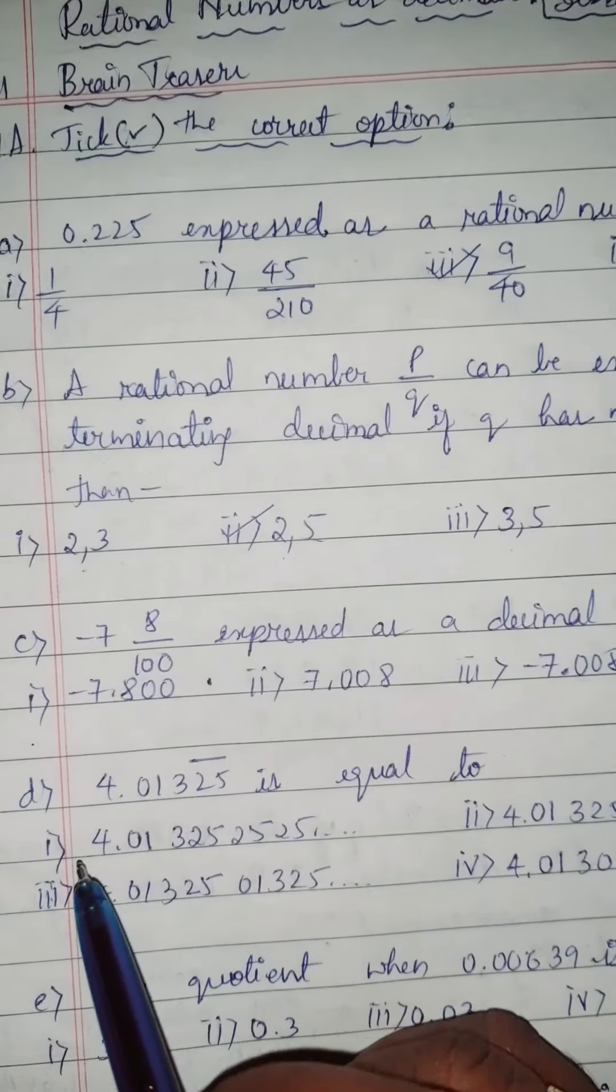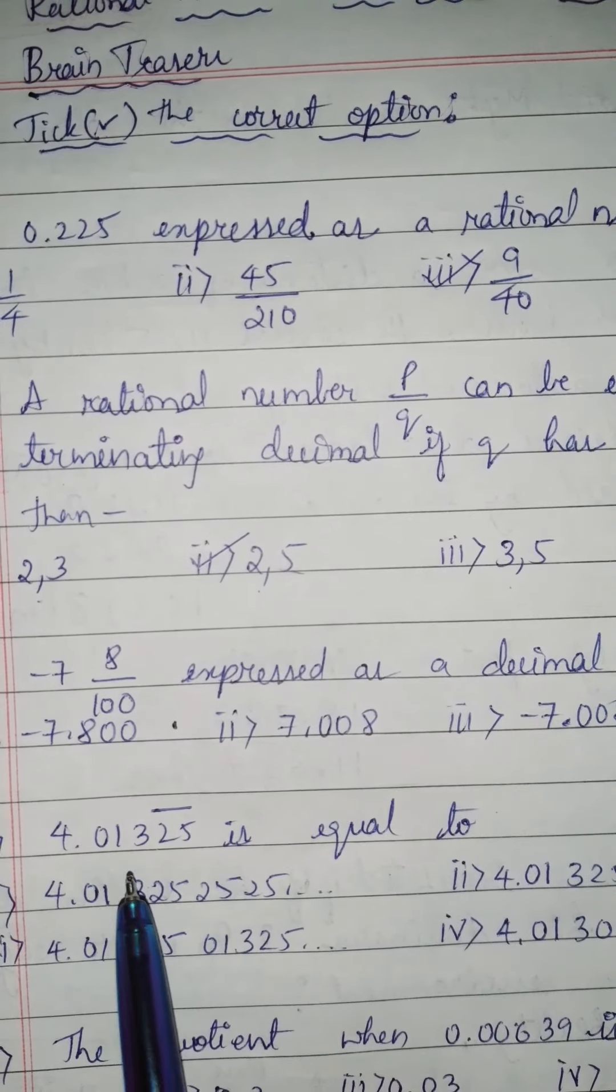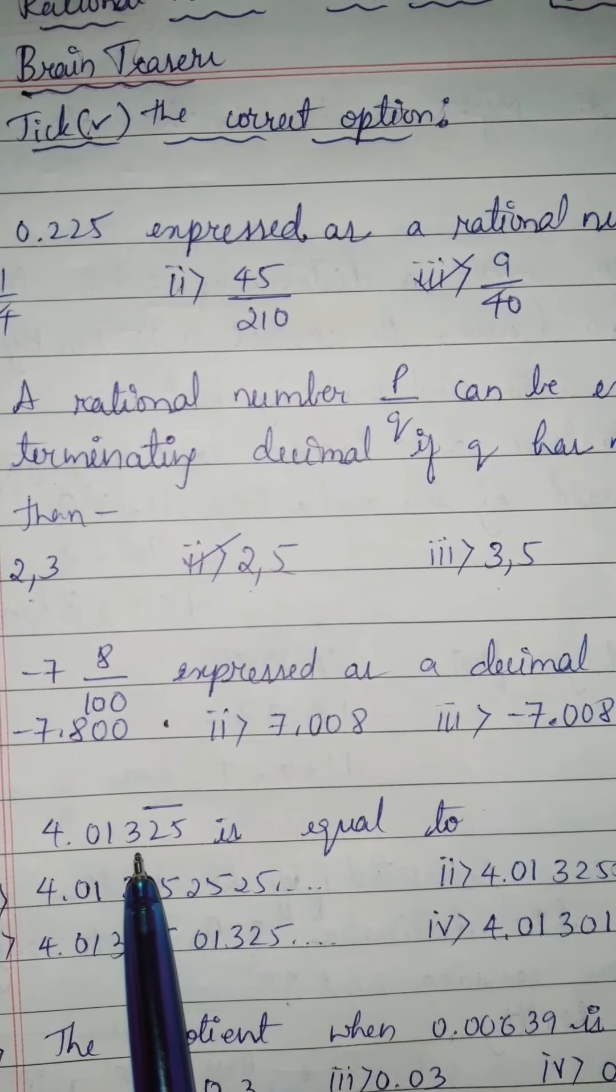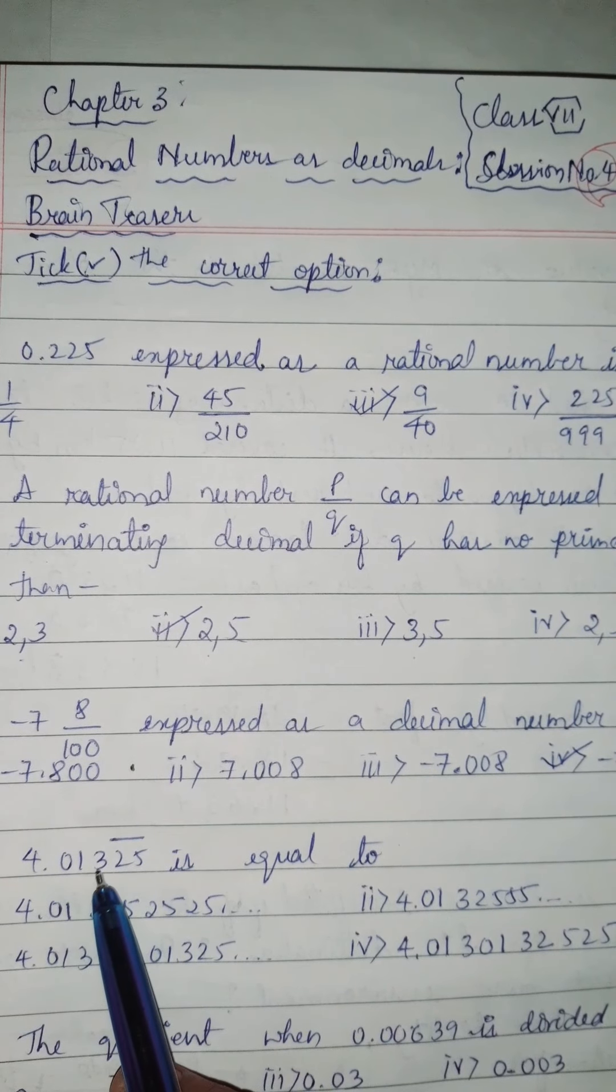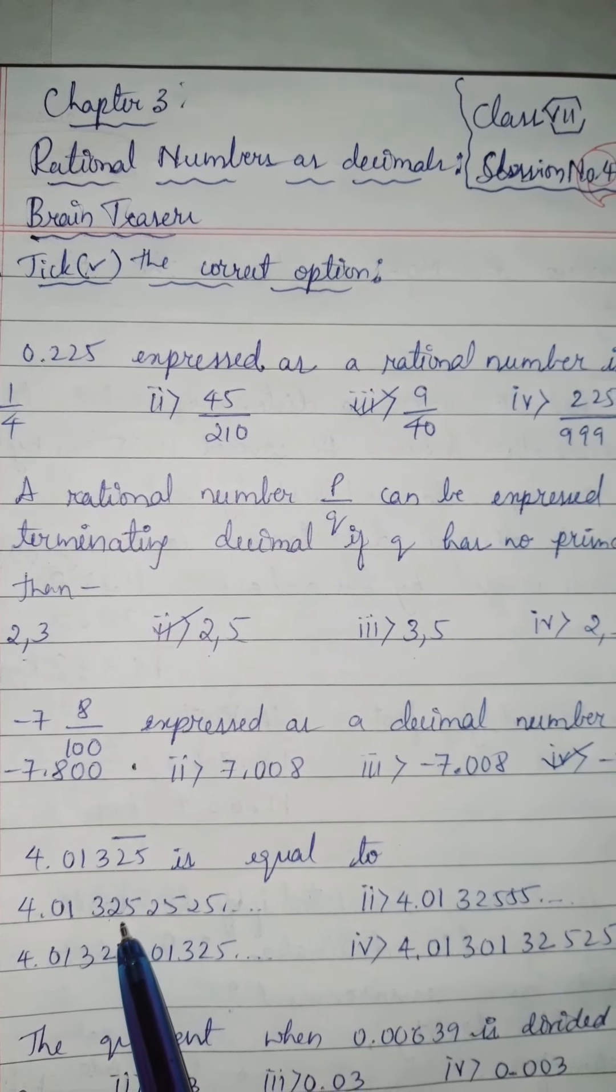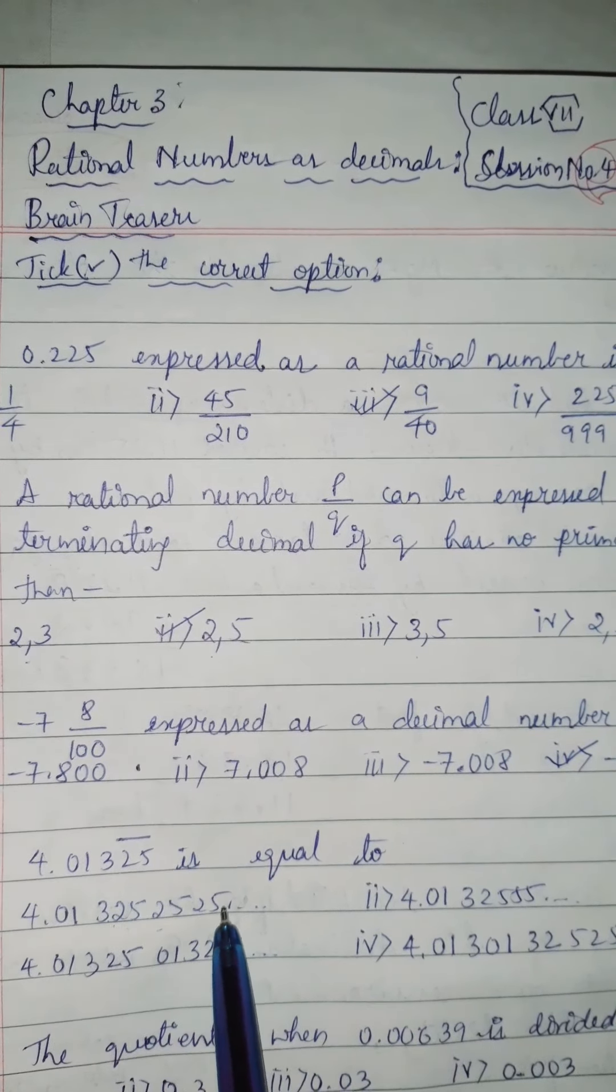Next is question number D. 4.01325 bar for 2, 5 is equal to. Here in this decimal number, only 2, 5 has to be repeated. So we have to find out in these 4 options where is 2, 5 repeated decimal. Here you can observe 4.01323 is one time, then 2, 5, 2, 5, 2, 5 is recurring. So the answer is first one.